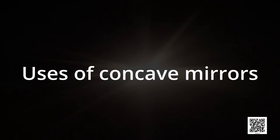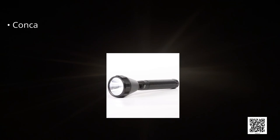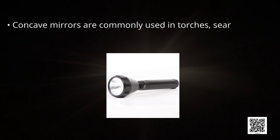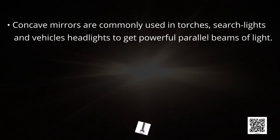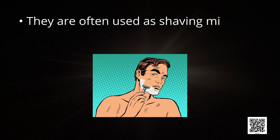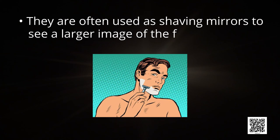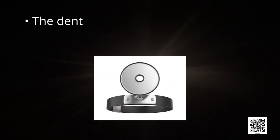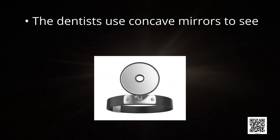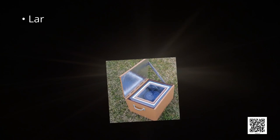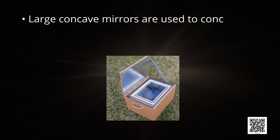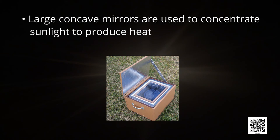Now let us see some uses of concave mirrors. Concave mirrors are commonly used in torches, searchlights, and vehicle headlights to get powerful parallel beams of light. They are often used as shaving mirrors to see a larger image of the face. Dentists use concave mirrors to see large images of the teeth of patients. Large concave mirrors are used to concentrate sunlight to produce heat in solar furnaces.